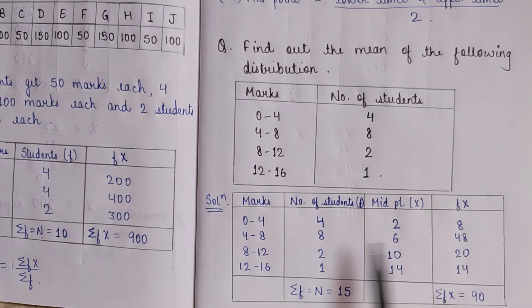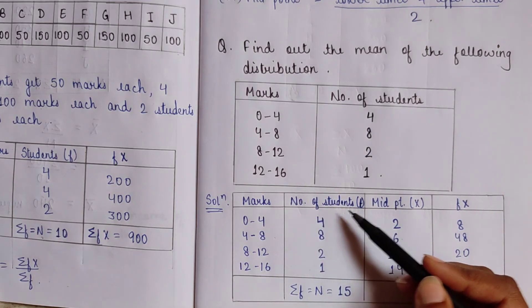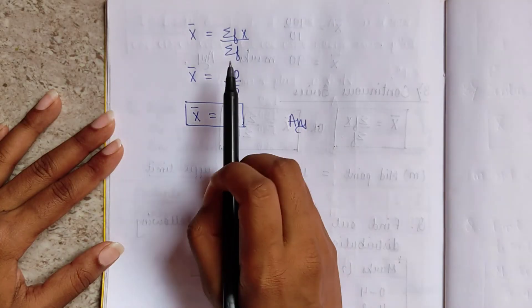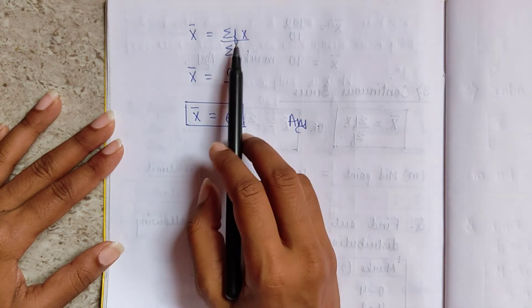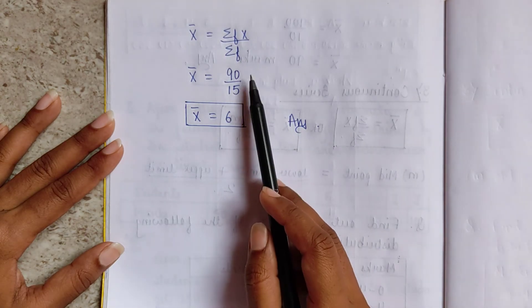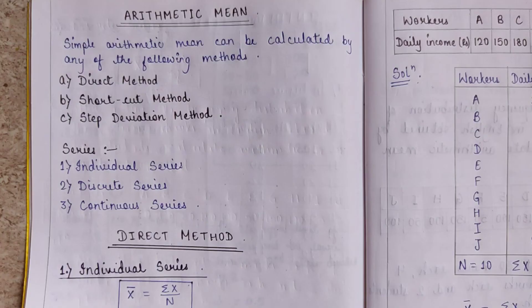Now we calculate F × X: 4 × 2 = 8, 8 × 6 = 48, 2 × 10 = 20, 1 × 14 = 14. The sum of frequencies ΣF = 15, and ΣFx = 90. Applying the formula: mean = ΣFx / ΣF = 90 / 15 = 6.